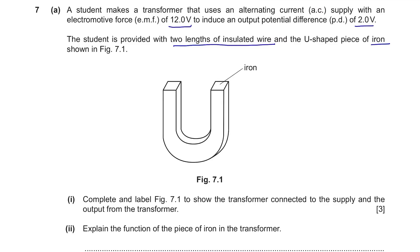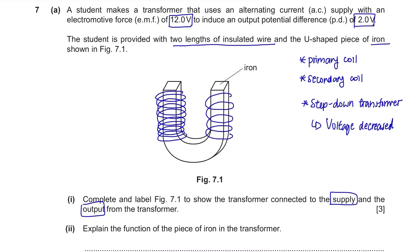Complete and label figure 7.1 to show the transformer connected to the supply and the output from the transformer. We need to make a transformer out of this iron and two lengths of insulated wire, so the primary and secondary coils should be around these two parts of the iron. It was supplied with 12V and the output is 2V, so it's a step-down transformer. Therefore, there should be more coils around the primary coil. Label these and it's done.